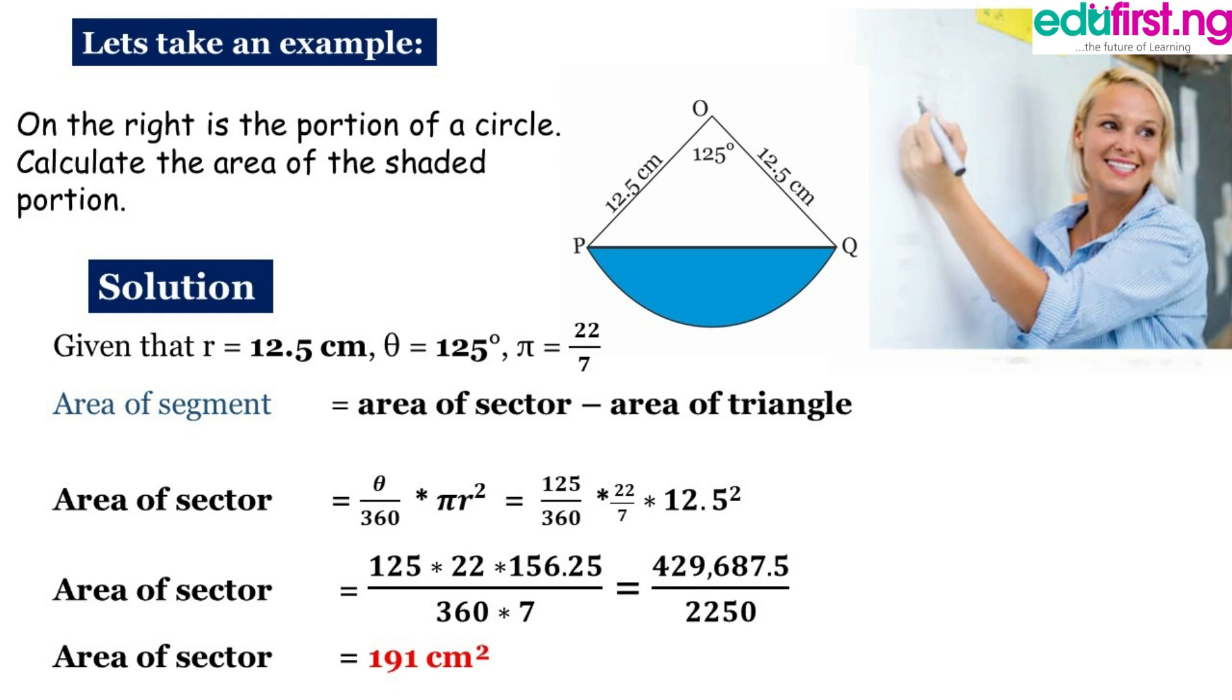Area of segment is area of sector minus area of triangle, remember? So we simply substitute the values. First of all we calculate the area of the sector. Substitute the values: theta for 125 degrees, pi for 22 over 7, and r for 12.5. So we got the area of the sector. If you punch that on your calculator with the math carefully, we're going to have 191 cm squared as the area of the sector.